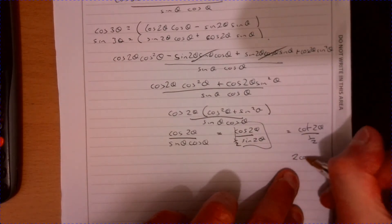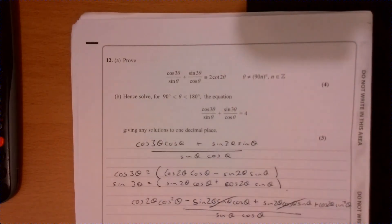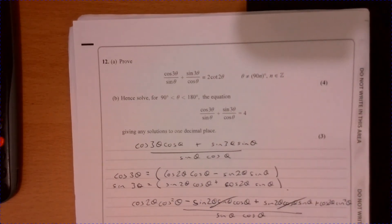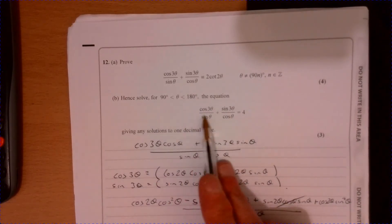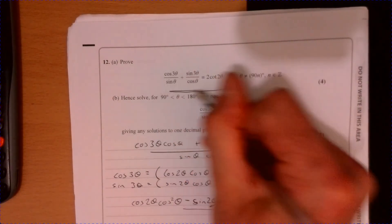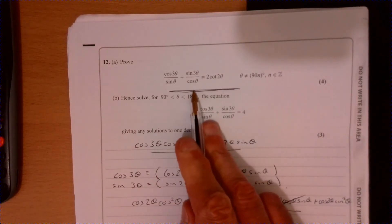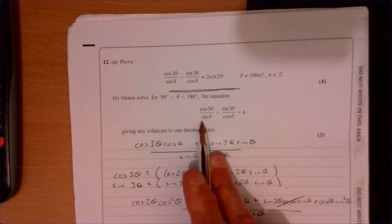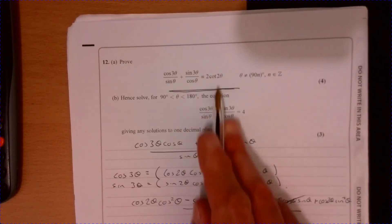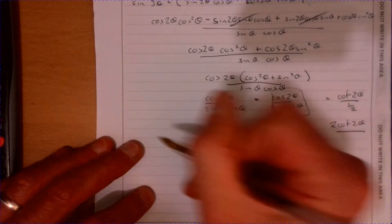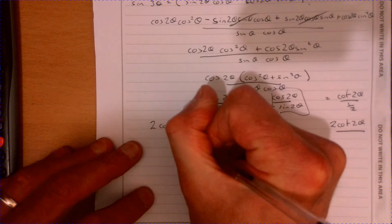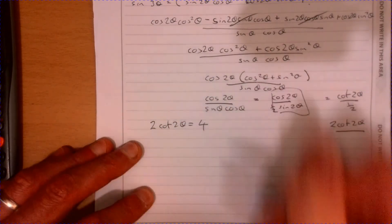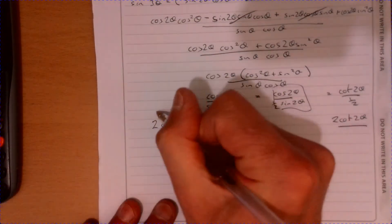Right, part b now. There's why have they told you this here: even if you couldn't do part a, you can still do part b because they told you this. So basically just rewrite this, but replace 2 cot 2θ. So we've got 2 cot 2θ equals 4, and then we just solve that.